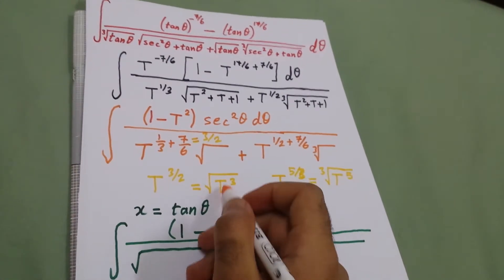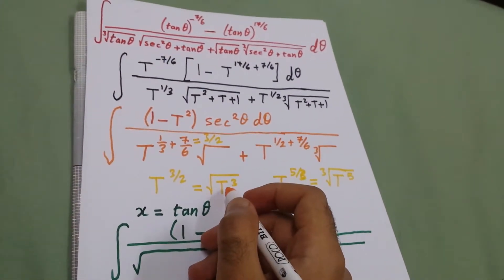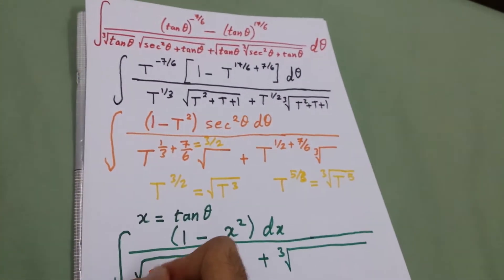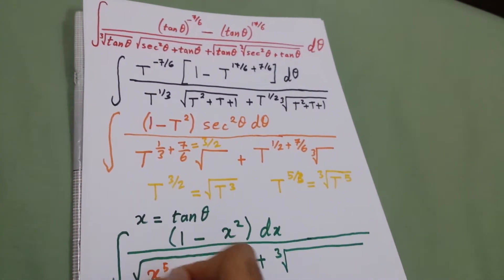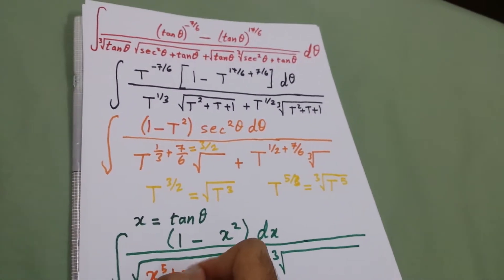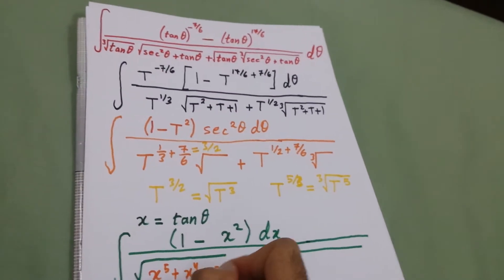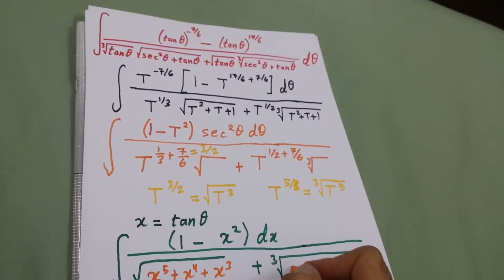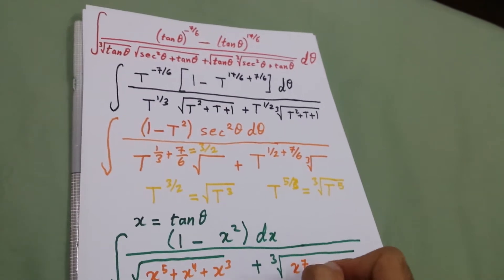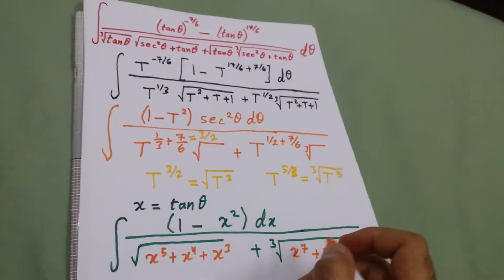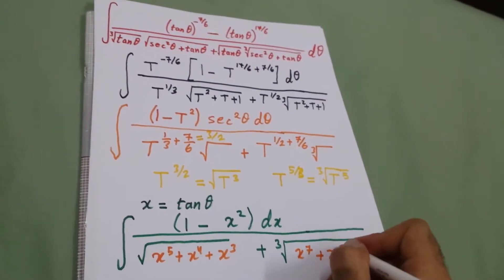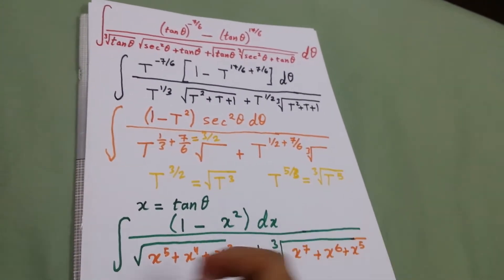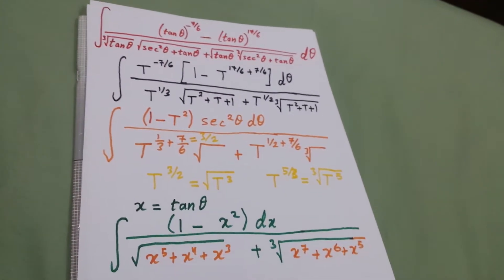Inside the square root we multiply by t to the power 3, which is x to the power 3, so it will be x to the power 5 plus x to the power 4 plus x cubed. And inside the cube root it will be x to the power 7 plus x to the power 6 plus x to the power 5.